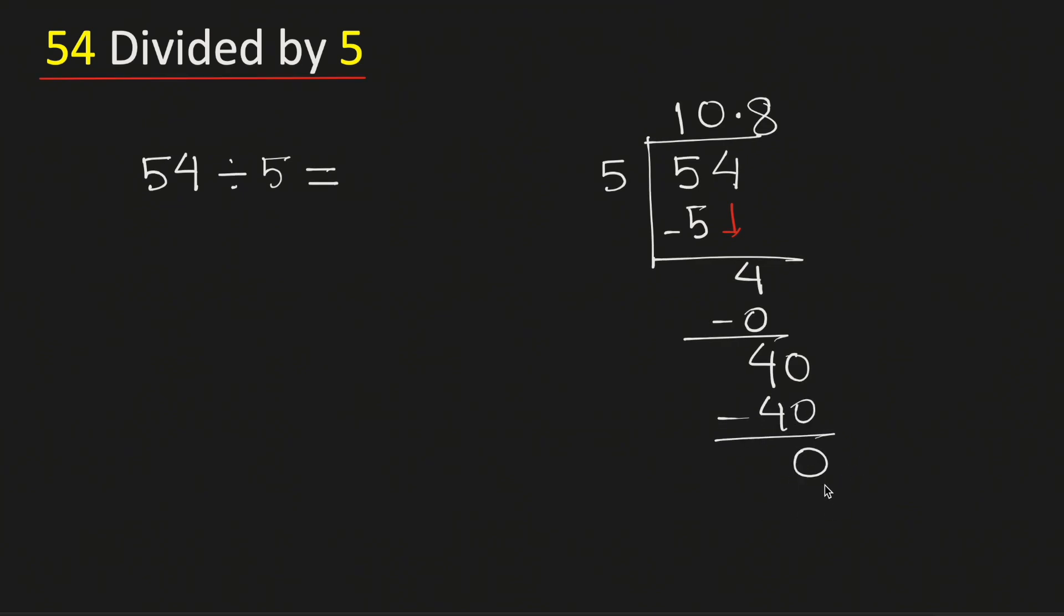As we have obtained the number 0 and there is no number to bring down, so we will stop. Therefore 54 divided by 5 is equal to 10.8, and this is our final answer. Thank you for watching.